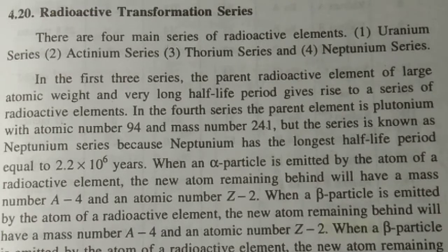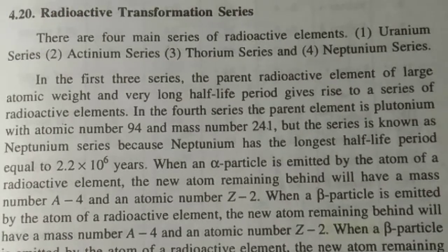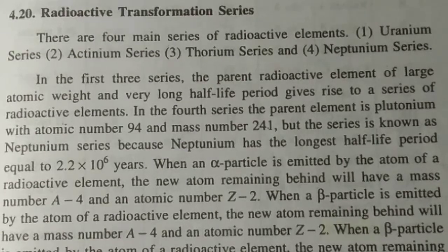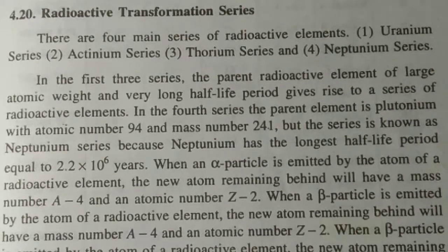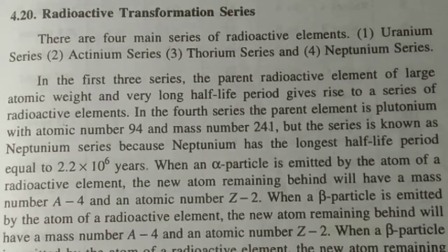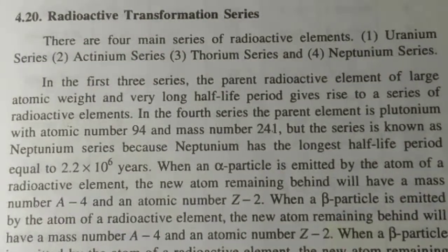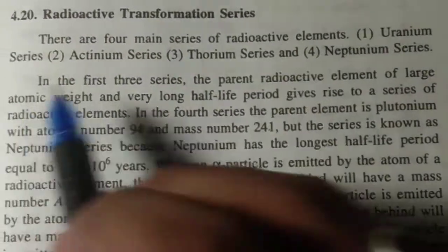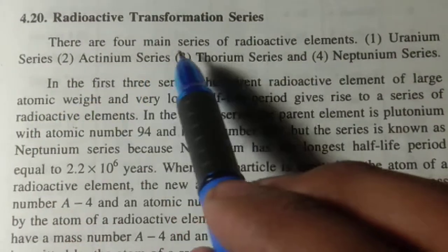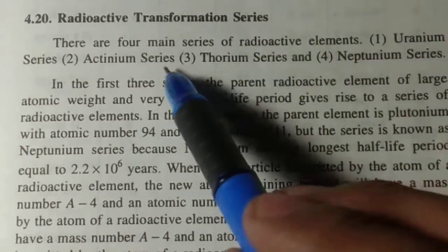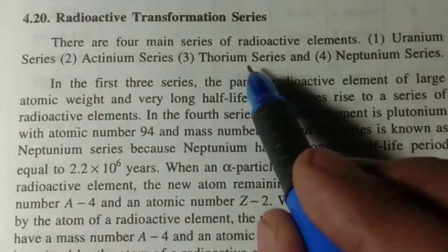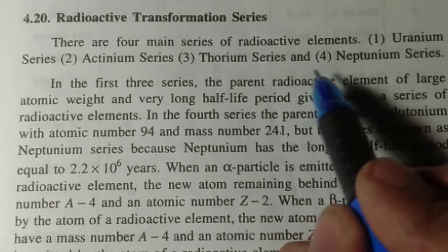Hello everyone, welcome to my channel Learning Institute. Today I am going to discuss radioactive transformation series in detail. I have already discussed the radioactivity part, so let's start the video. There are four main series of radioactivity elements: first is uranium series, second actinium series, third thorium series, and the fourth one is neptunian series.